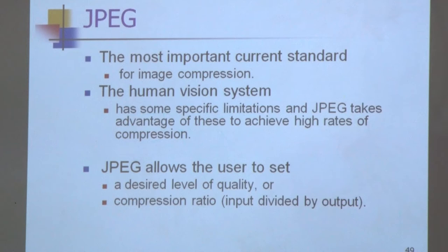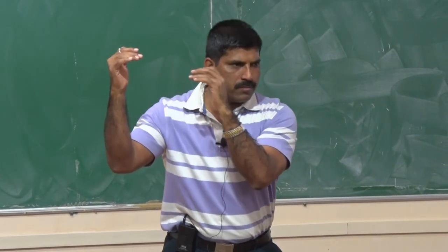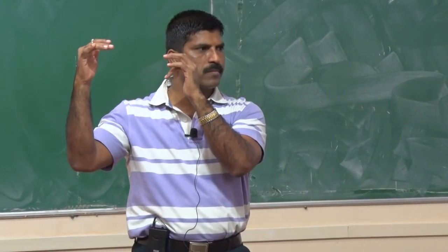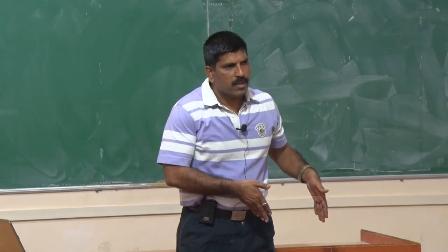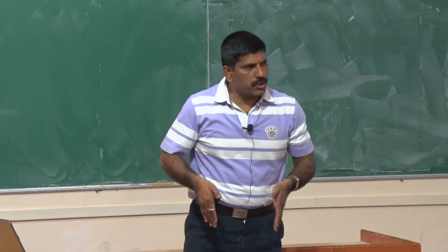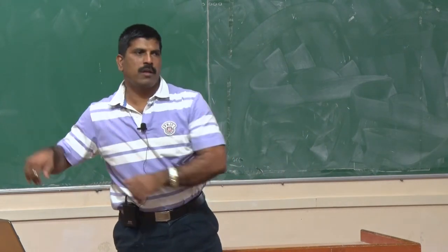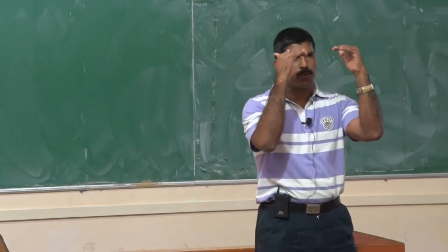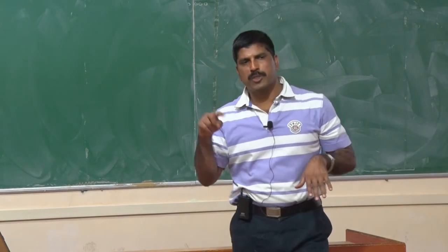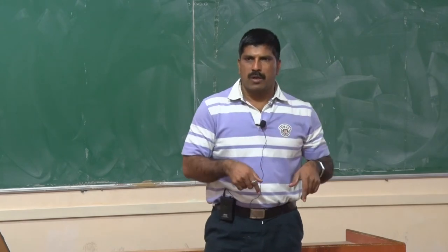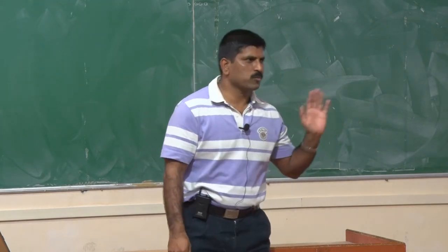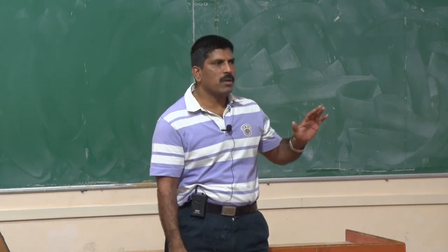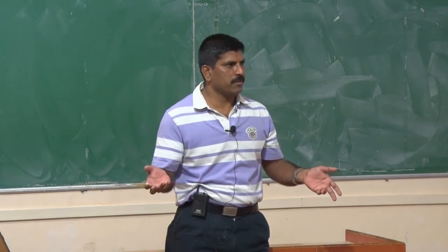The block diagram of JPEG has: original image, then transform, then quantization, then encoding — this is the transmitter side. The receiver side has: decoding, then dequantization, then inverse transform, and you get the original image back. In original JPEG, the transform used is DCT. In JPEG 2000, instead of DCT, a wavelet transform is used to convert spatial domain information into the transform domain.